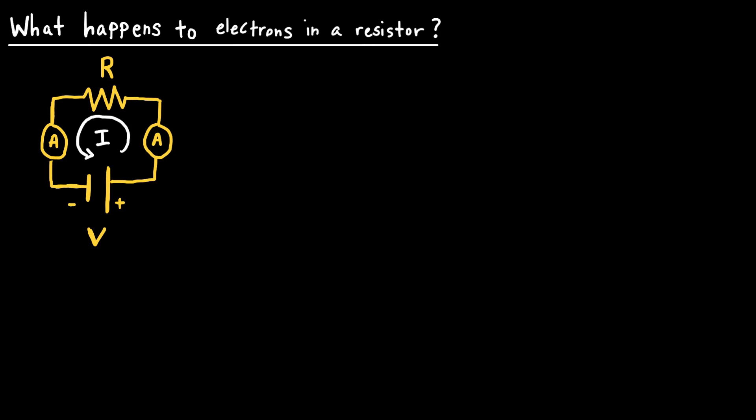Now what would happen if I were to add another resistor of resistance R to this series circuit? By Ohm's law, the equivalent resistance of the circuit has increased, and therefore the total current in the circuit will decrease, because the voltage V applied by the battery has not changed. Students who learn that current equals a rate of flow of charge — delta Q over delta T — are led to believe that when resistance increases, the current decreases, which means the rate of flow of charge must be decreasing. Therefore students are made to believe that as electrons move through the circuit, they slow down as they pass through the resistor. But of course this isn't true.